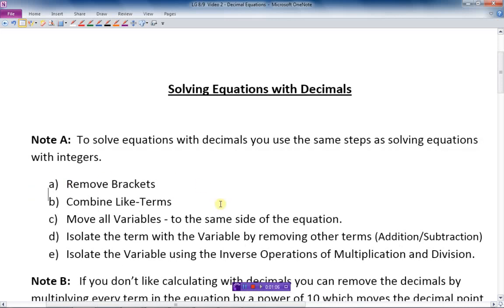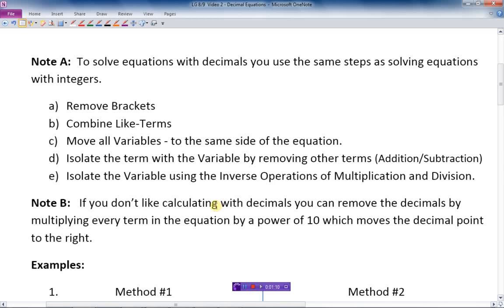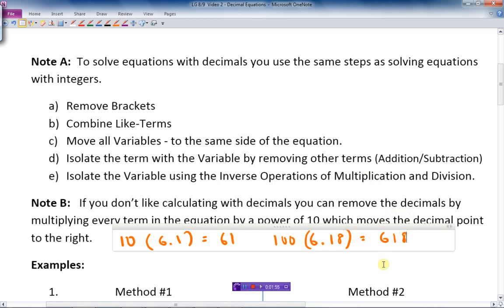This is another note here I want to mention. If you don't like calculating with decimals, you can remove the decimals by multiplying every term in the equation by a power of ten, which moves the decimal point to the right. For instance, if I multiply 10 times 6.1, it gets 61. If I had a number like 6.18 and want to move it two places to the right, I'd have to multiply this by 100 and it gets 618. So let's just do a couple of questions.